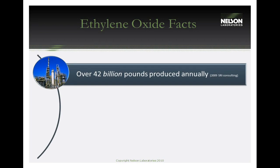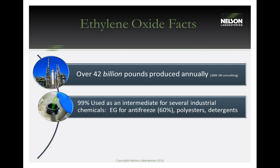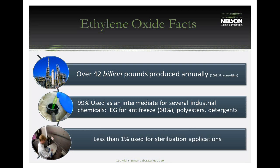It is estimated that over 42 billion pounds of ethylene oxide are produced annually, making it the 11th largest manufactured chemical. Ninety-nine percent is used for other industrial chemicals — about 60% goes into antifreeze as ethylene glycol, and it's also used for polyesters and detergents. Surprisingly, less than 1% of total production is used for sterilization applications, even though sterilization is essentially our entire focus.